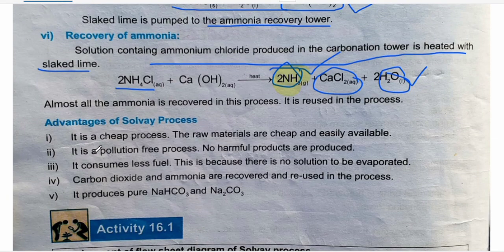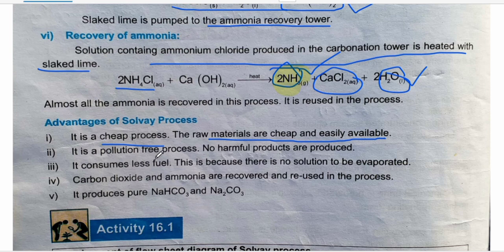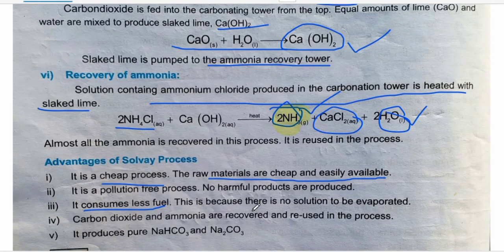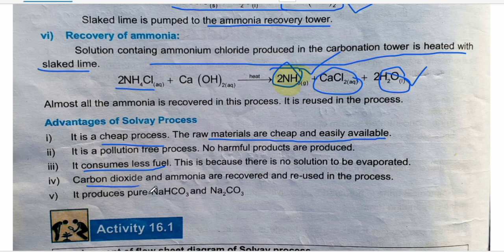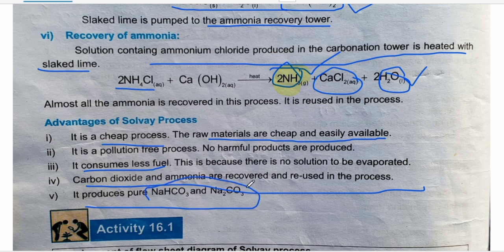Looking at the advantages of the Solvay process: it is a cheap process in which raw materials — ammonia, water, and sodium chloride — are all cheap. It is a pollution-free process because no harmful gases are released; the carbon dioxide produced is reused and does not enter the atmosphere. It consumes less fuel because heating is minimal and no evaporation of solution is required. Carbon dioxide and ammonia are regenerated and reused, so raw material costs remain low.